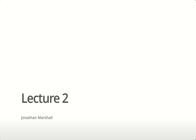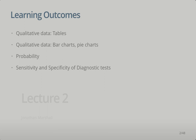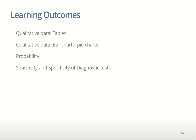Hi there and welcome to lecture two for Biostats. Today we're going to be looking at qualitative data — you'll remember these two major data types: quantitative and qualitative. Quantitative data are numeric measures while qualitative data are labels or categories. We're looking at how we can summarize qualitative data using tables, bar charts, and pie charts, then at determining probabilities from tables, and specifically at sensitivity and specificity of diagnostic tests.